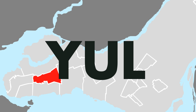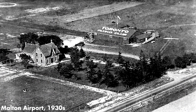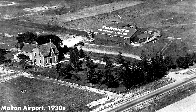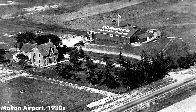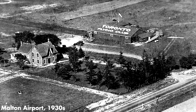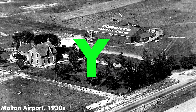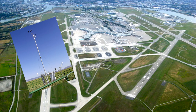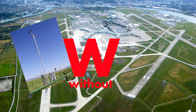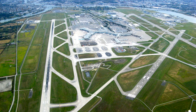But how did these two-letter codes get the letter Y in front of them? In the 1930s, airports started to use the same two-letter weather station or radio codes and added a letter in front — where Y, which signified 'yes,' indicated that a weather station was located within the airport, while W, for 'without,' signified that it was without a weather station.